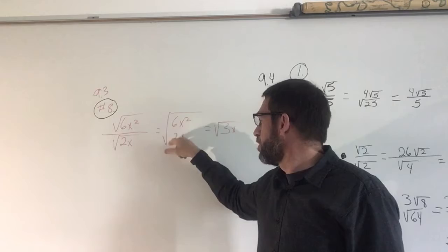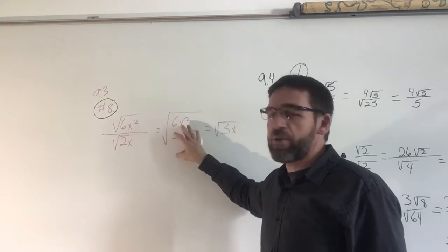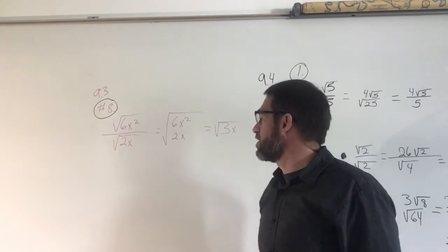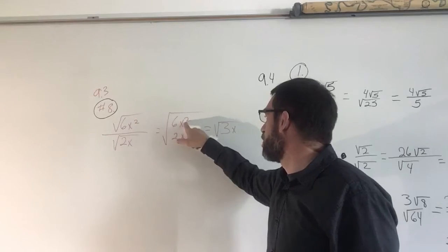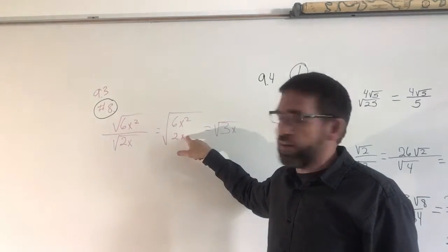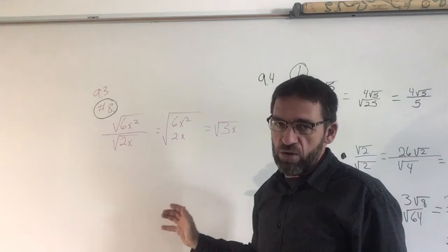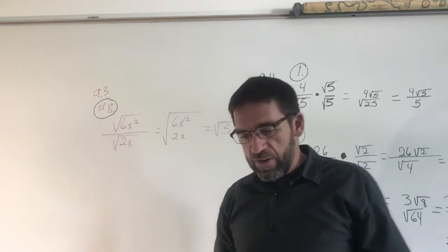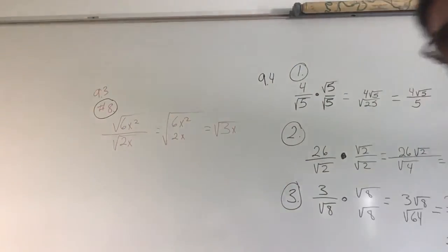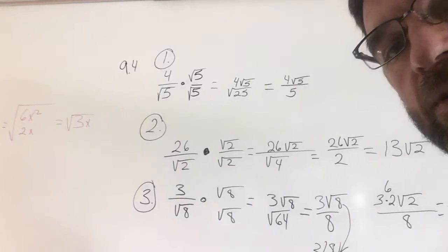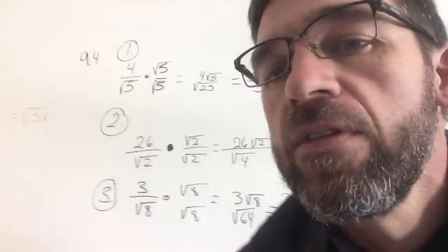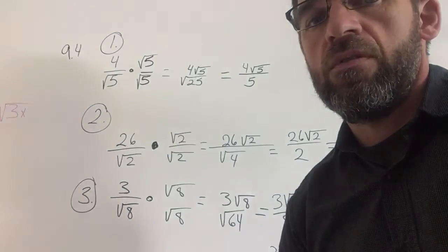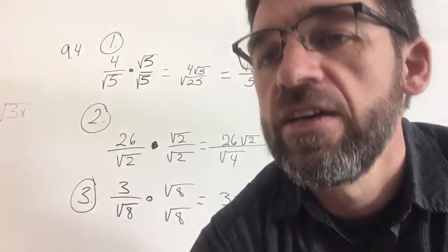If you want to do that combining step in your mind, that's fine. Basically you can take the 2x into the 6x — the reason you can do that is because of the x² and the single x. If it is not doubled like that you can't do it, but this one you can. So that's a little bit of a tricky one. Alright, on 9.4 today I will move over and talk about that one.